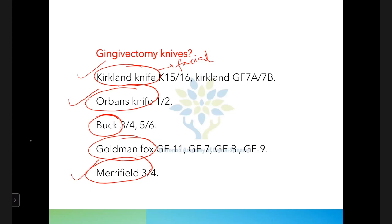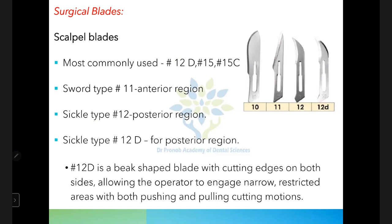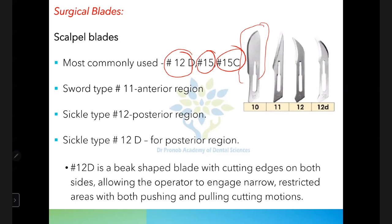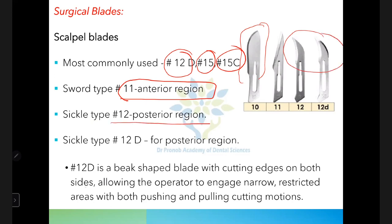Next are surgical blades used for giving incisions. The most commonly used blades are 12D, 15, and 15C. Blade 10 has a very broad shape, blade 11 has a narrow sword-type shape used in the anterior region, and blade 12 has a sickle-type curved shape used in the posterior region.